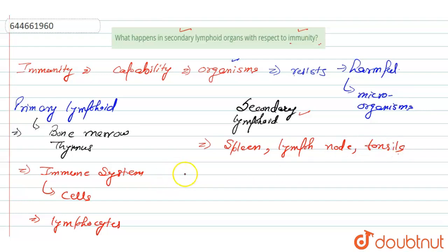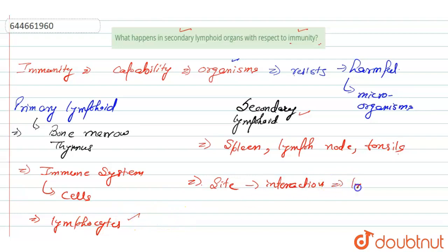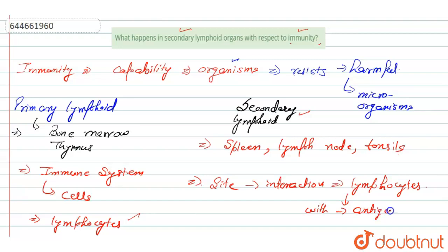In the secondary lymphoid organs, these organs provide a site for the interaction of mature lymphocytes with antigens. So here, the lymphocytes interact with the antigens.